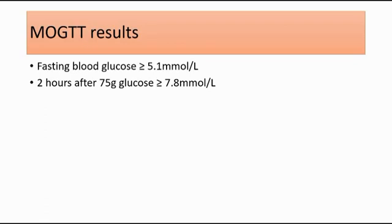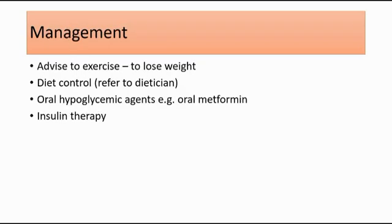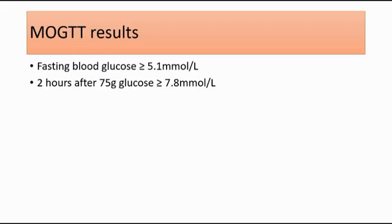For the results, if the fasting blood glucose is more than or equal to 5.1 mmol per litre, and if the 2-hour post-glucose reading is more than or equal to 7.8 mmol per litre, this confirms GDM. Any one of these two results will confirm GDM.